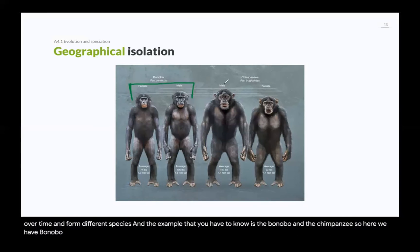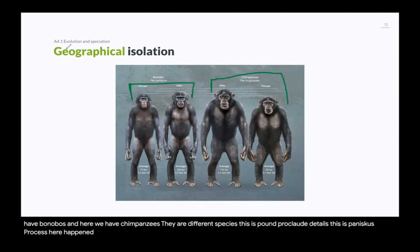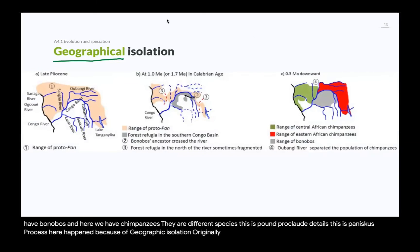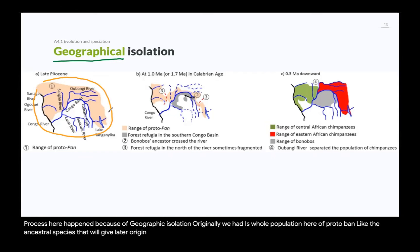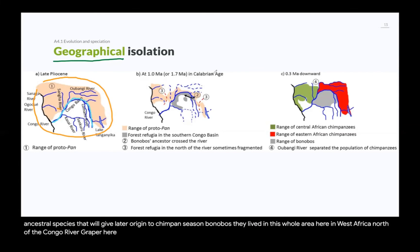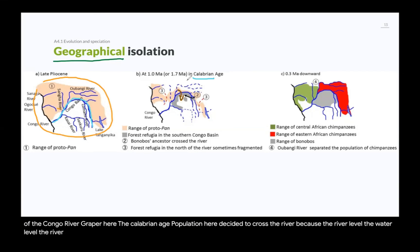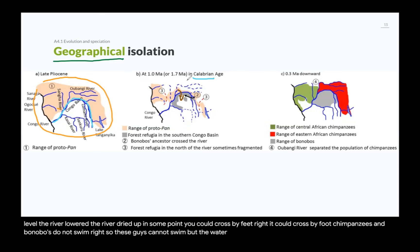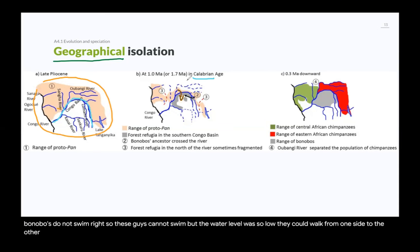The example you have to know is bonobos and chimpanzees. Bonobos (Pan paniscus) and chimpanzees (Pan troglodytes) are different species, and their speciation happened due to geographic isolation. Originally there was a whole population of a proto-Pan ancestral species living in West Africa north of the Congo River. During the Calabrian age, the river water level lowered enough that a small population could cross on foot — chimpanzees and bonobos cannot swim, but the water was so low they could walk across. Some of them crossed over, attracted by the forest on the other side.